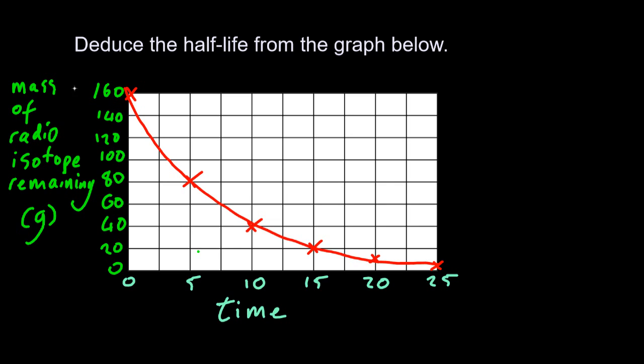Deduce the half-life from the graph below. At zero time, I had 160 grams of my isotope. And it took five time units to get to half of that, which is 80. So the half-life is five.